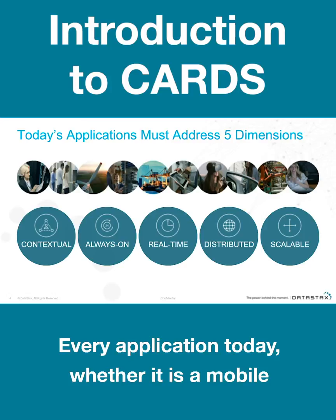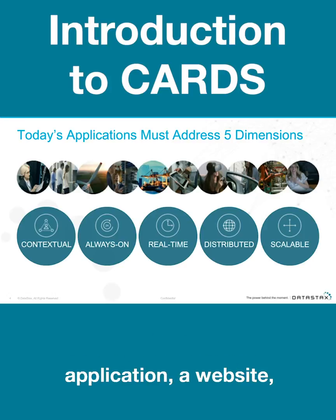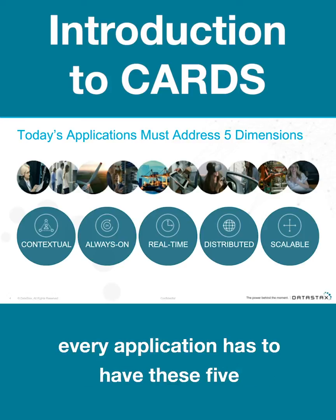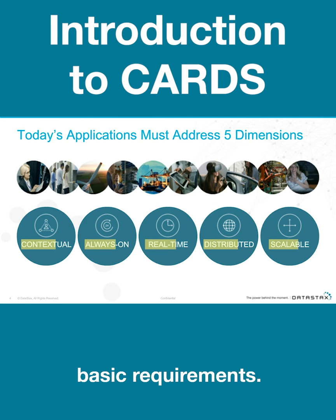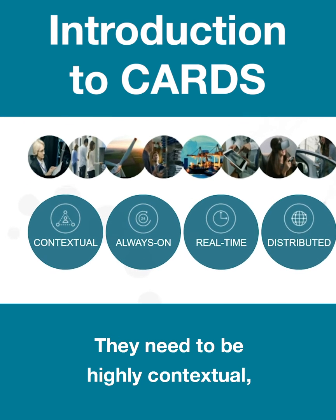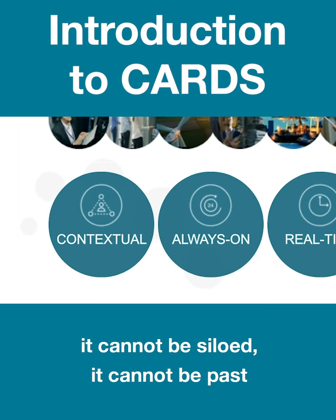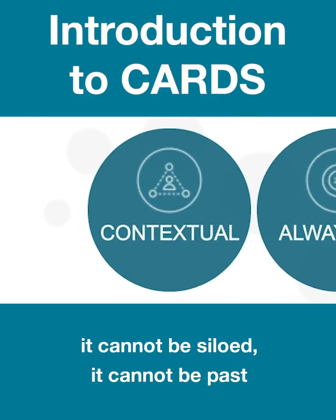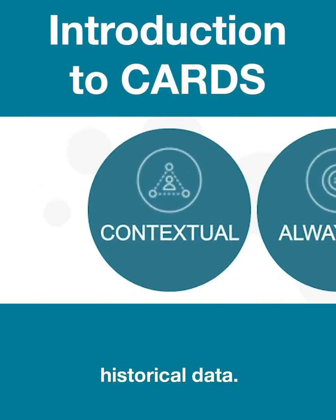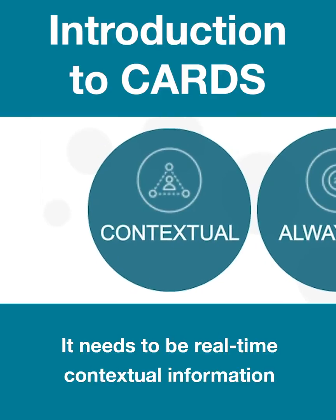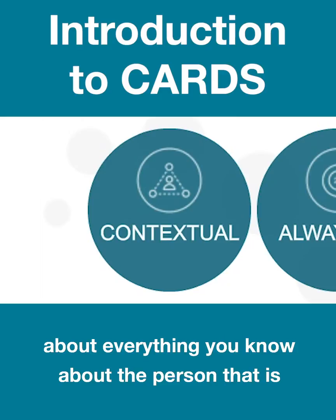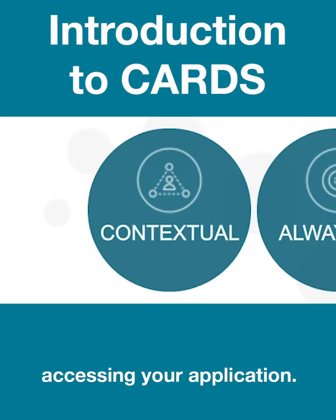Every application today, whether it is a mobile application, a website, every application has to have these five basic requirements. They need to be highly contextual. It cannot be siloed. It cannot be past historical data. It needs to be real-time contextual information about everything that you know about the person that is accessing your application.